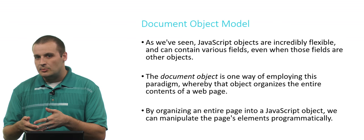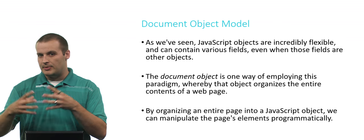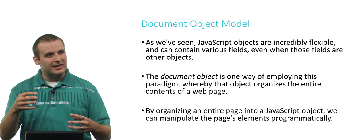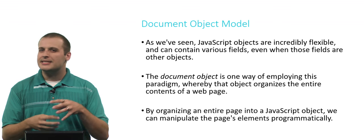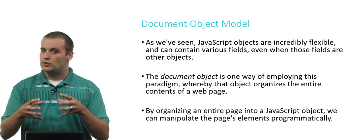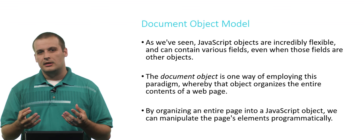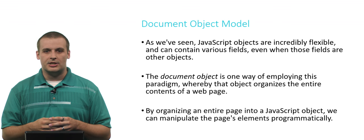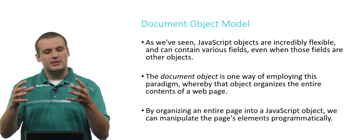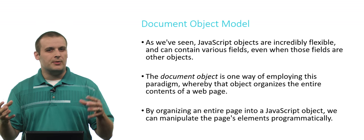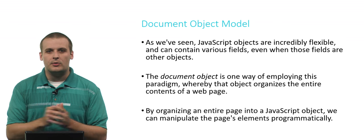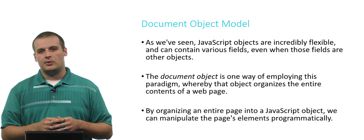Those objects you put inside a bigger object can also contain other objects. So you can create a nesting structure of objects within a single JavaScript object. If you think back to our discussion about trees, it kind of creates a tree structure, where you have one object, inside of that there's another one, inside of those there's others, and so on.